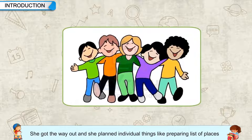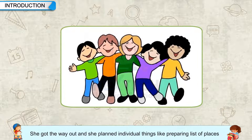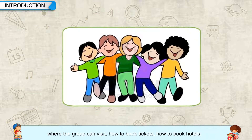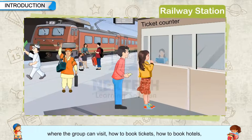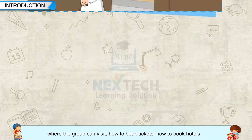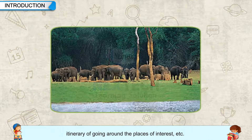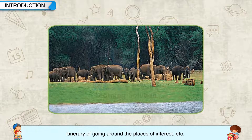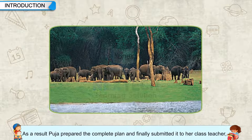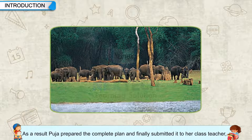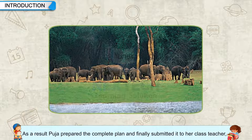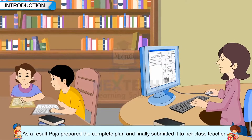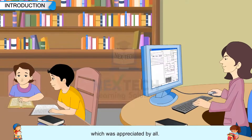She got the way out and planned individual things like preparing a list of places where the group can visit, how to book tickets, how to book hotels, and the itinerary of going around the places of interest. As a result, Pooja prepared the complete plan and finally submitted it to her class teacher, which was appreciated by all.